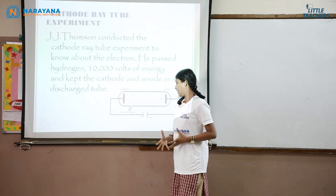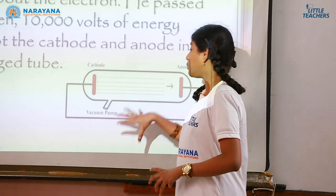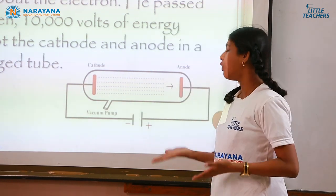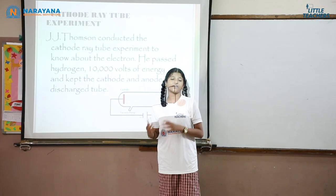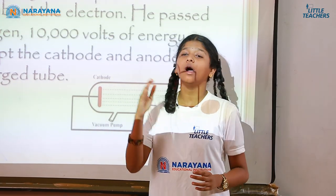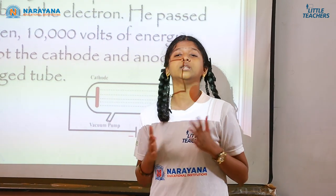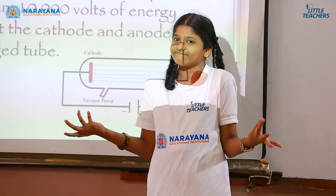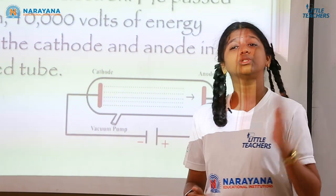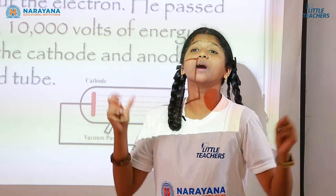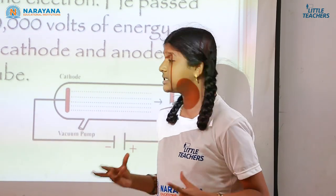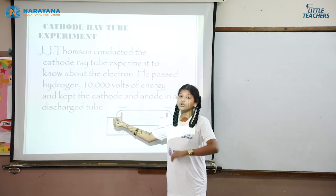What he actually did was connect the discharge tube with the vacuum pump and the high voltage generator to pass hydrogen and electricity. He first passed 100 volts of energy with hydrogen gas present but saw no change. Then he passed 1000 volts by reducing the gas pressure to 2.01 atmospheric pressure but still saw nothing. Then he passed 10,000 volts by reducing the gas pressure down to 0.001 atmospheric pressure and saw a miracle — a ray illuminating the whole discharge tube, passing from the cathode through the anode.